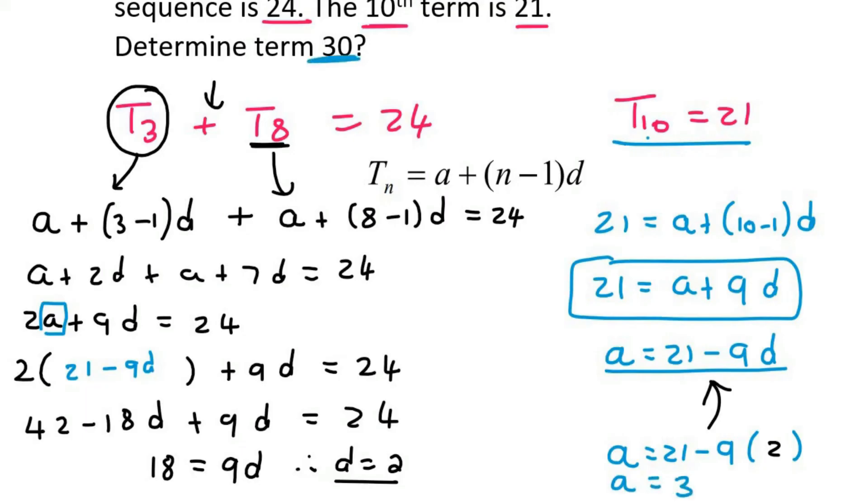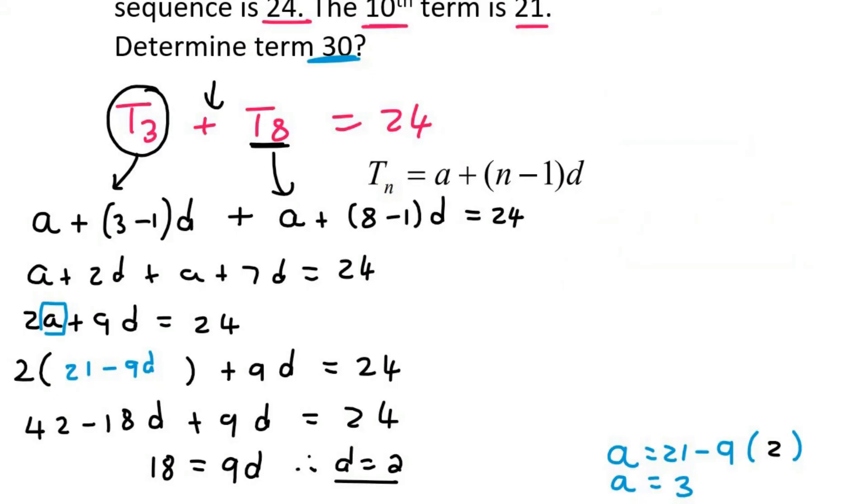The question then says, find term 30. So we can then go to our normal formula and find term 30. Because we now have A as 3, term 30, and then D is 2. And so we should end up with 61 as our answer.